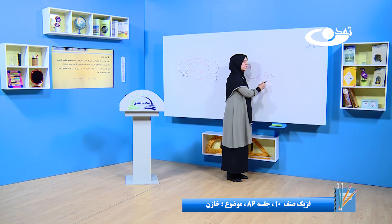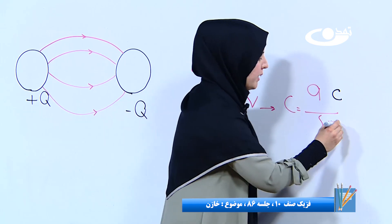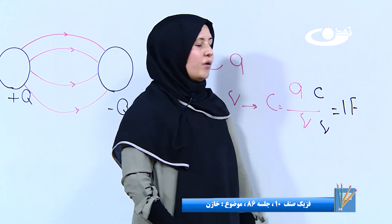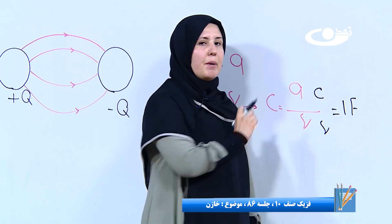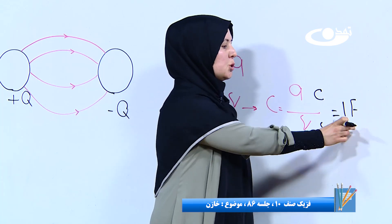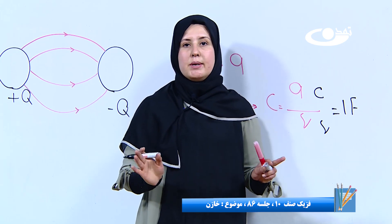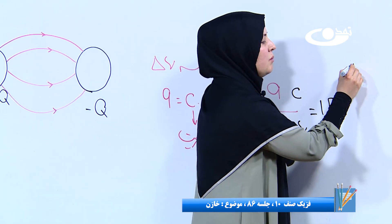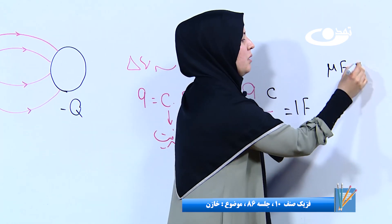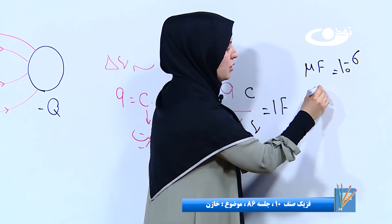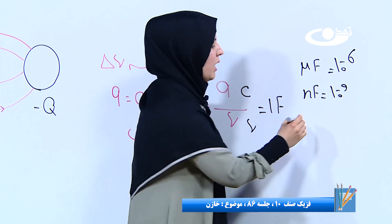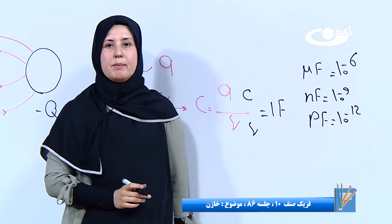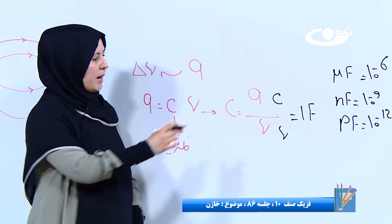ببینیم که چه واحد اندازه‌گیری متناسب با ظرفیت ما می‌باشد. مقدار Q را داریم کولمب، و برای تفاوت پتانسیل واحد اندازه‌گیری می‌شود ولت. کولمب بر ولت برابر است با یک فاراد. فاراد به نام دانشمندی که ظرفیت را برای ما شناسایی کرد - مایکل فارادی - نام‌گذاری شده. یک فاراد مقدار بسیار بزرگی است؛ مقادیر کوچک‌تر داریم: میکروفاراد (۱۰⁻⁶)، نانوفاراد (۱۰⁻⁹)، و پیکوفاراد (۱۰⁻¹²).